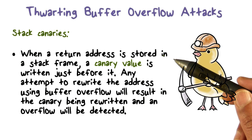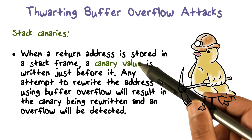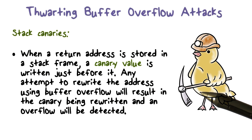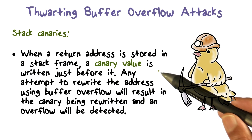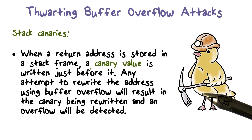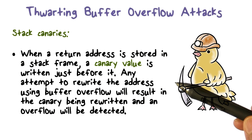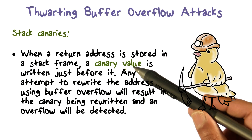So how can we detect any modifications? One technique is what is called stack canaries — like canaries in coal mines, those birds that tell you when harmful gas concentration is high. What we can do is, just before the return address in a stack frame, store a canary value when the function call is made. If you're going to overflow into the return address, you're going to come via this canary value.